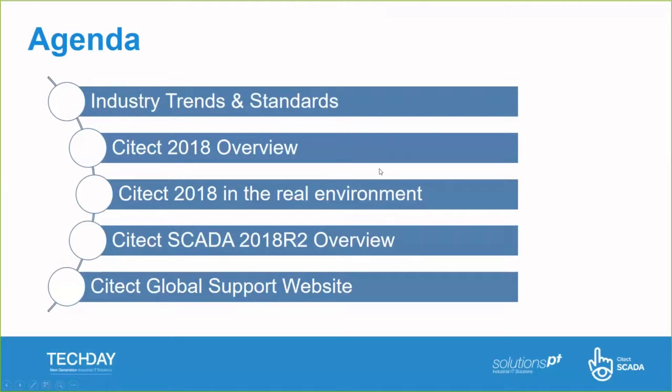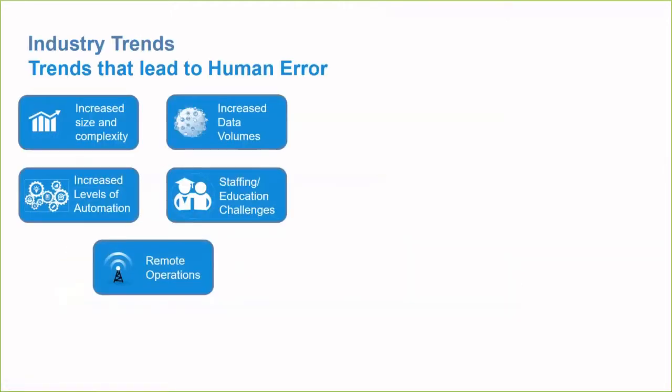Here are some trends that are leading to an increase in human error within our processing facilities. Processing plants are becoming larger and more complex. We're also seeing smart equipment bringing more data into the control system. There are increased levels of automation which can actually make things quite difficult for operators when trying to resolve plant disturbances. Staffing and education continues to challenge this industry, and we're seeing more remote operations included within plant-wide control systems.